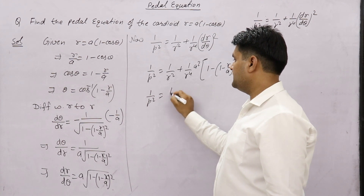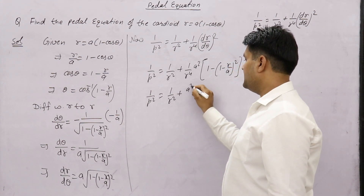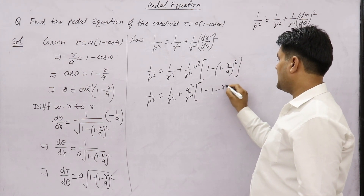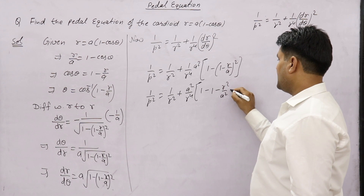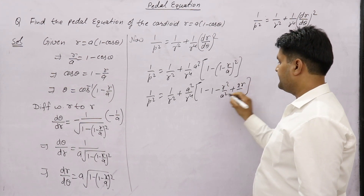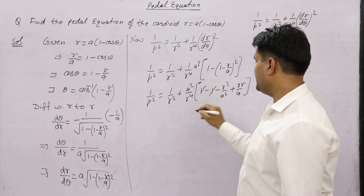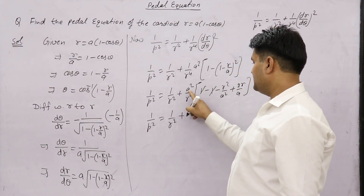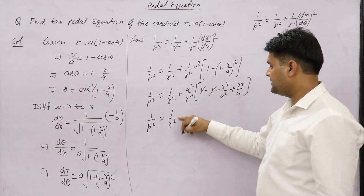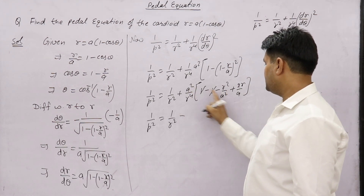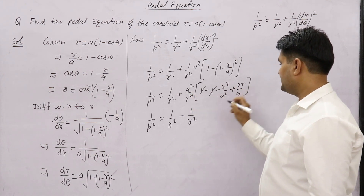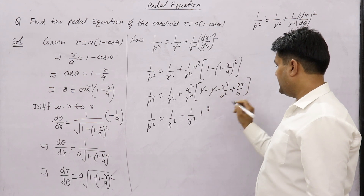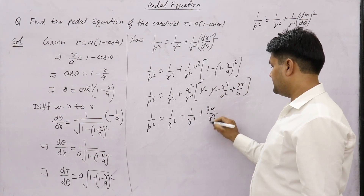So 1/p² = 1/r² + (1/r⁴) × [1 - (1 - r/a)²]. Expanding: 1 - (1 - r/a)² = 1 - 1 + 2r/a - r²/a² = 2r/a - r²/a². The 1s cancel, and after multiplying through, the a² terms cancel, leaving 1/p² = 1/r² + 2a/r³.